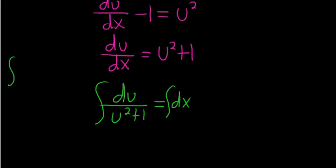The left-hand side is a common integral. If you have dx over (a squared plus x squared), the formula says that this is 1 over a times arctan of (x over a) plus some arbitrary constant.